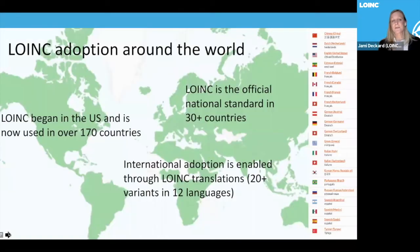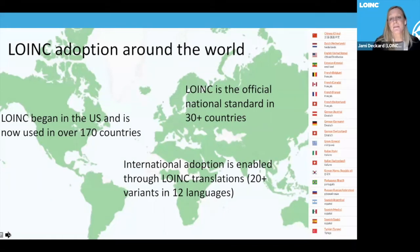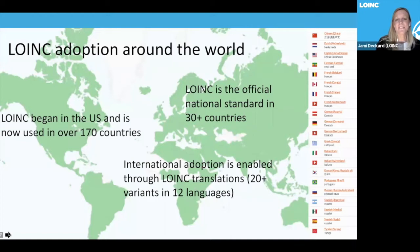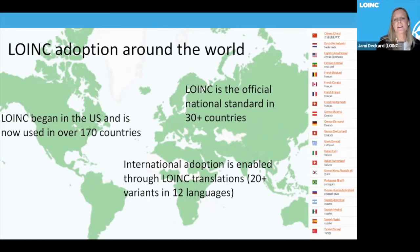LOINC adoption began in the U.S. but is now used in over 170 countries, and it's the official national standard in over 30 countries that we are officially aware of. International adoption is enabled through volunteers who translate LOINC — we currently have over 20 different variants in 12 languages — and we're always interested in adding to those translations to continue international adoption.